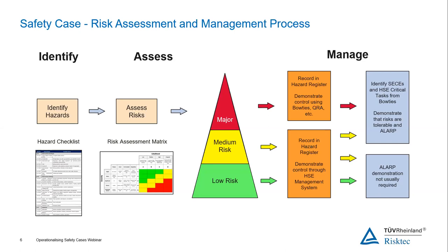A very quick example: starting at the left-hand side of the process, we've gone through our hazard checklist and one of the items is paint. Do you have tins of paint on your facility? Yes, we do. So we assess what's the risk associated with the paint if it was to come out of the tin. That might come through as green — we don't want it to happen, but it's not particularly high consequence. So we've recorded it in the hazard register and we would control it through our management system. That would be procedures about using paint, storing paint, and PPE. That's how we manage that kind of risk.